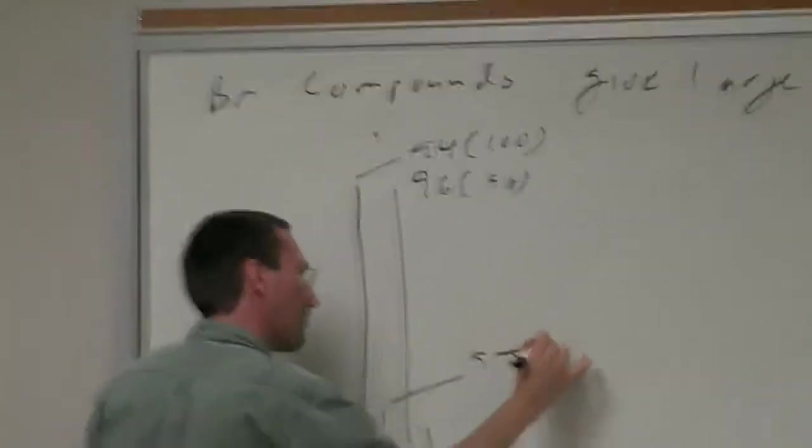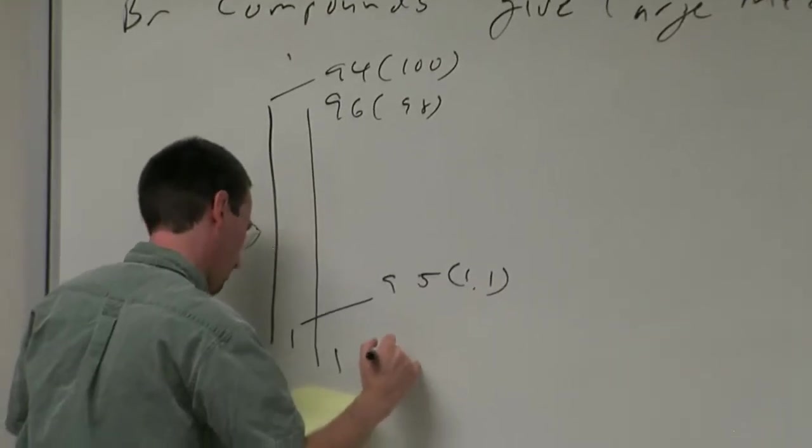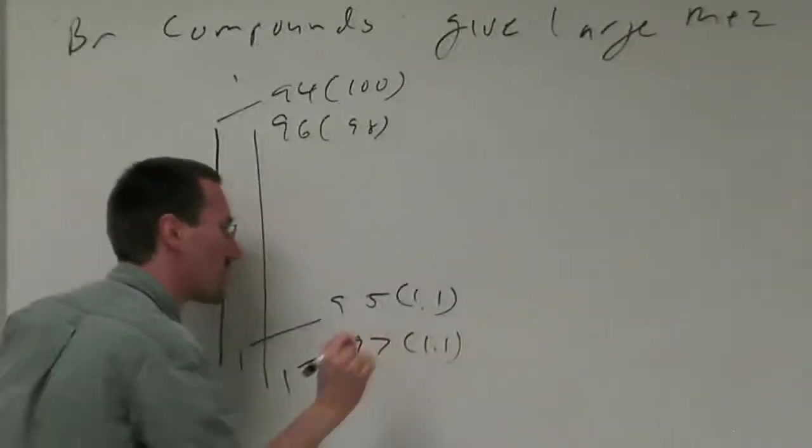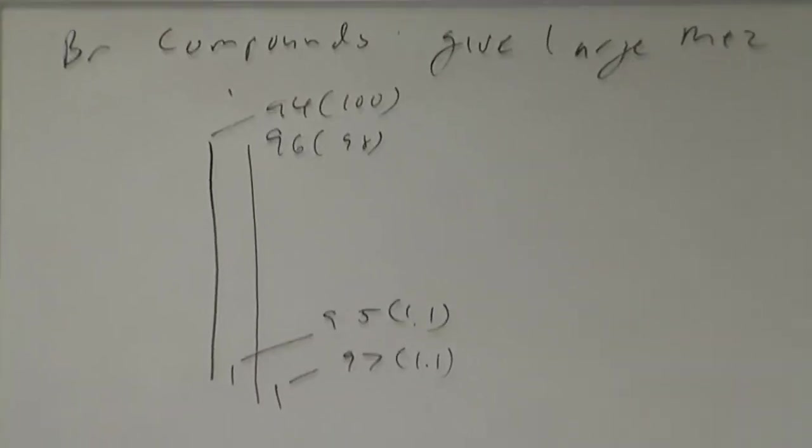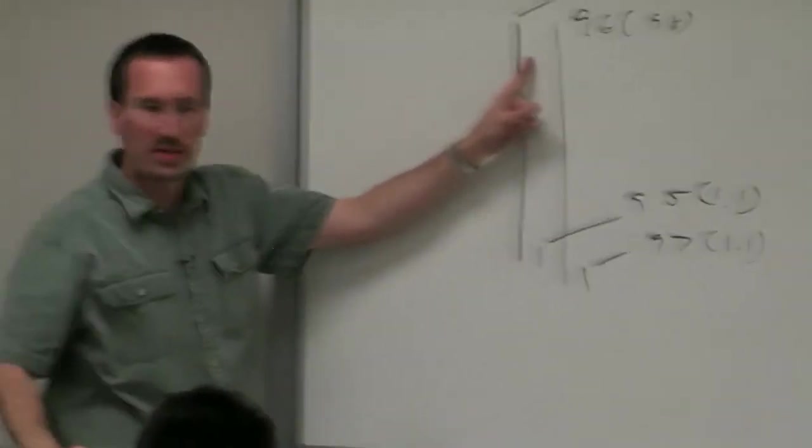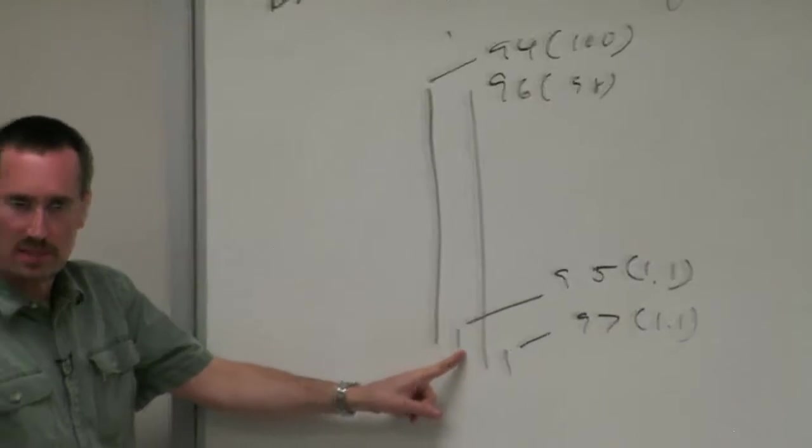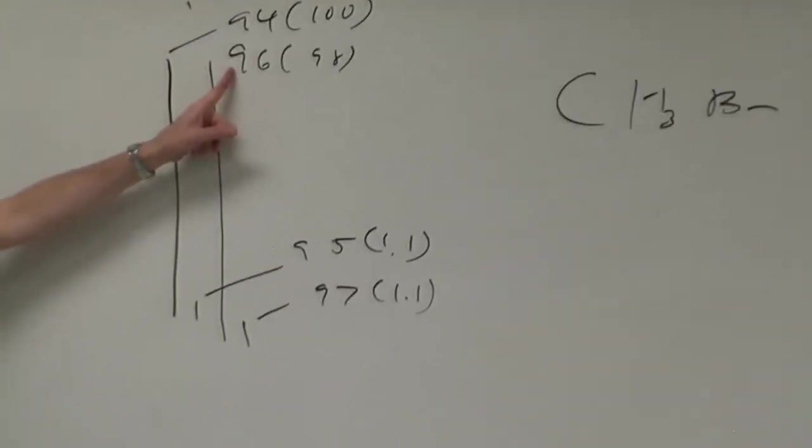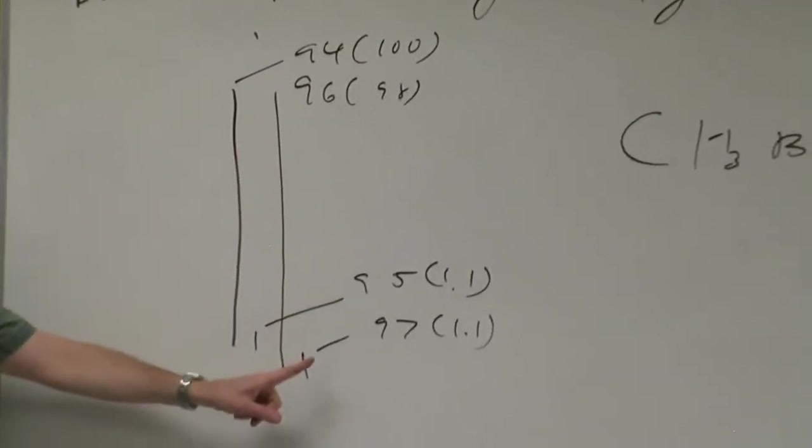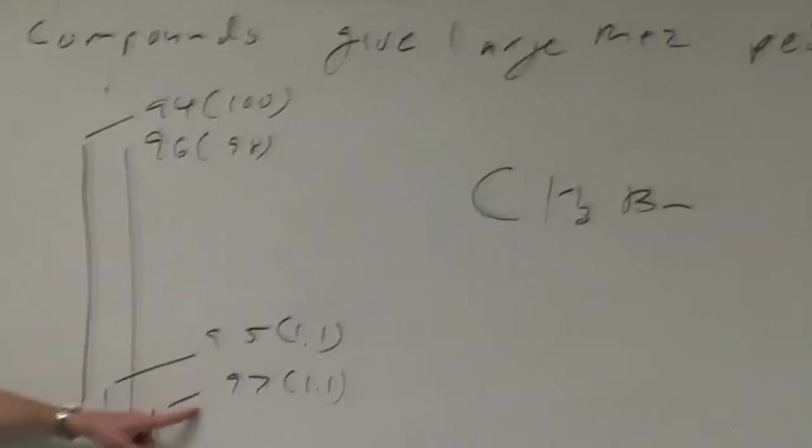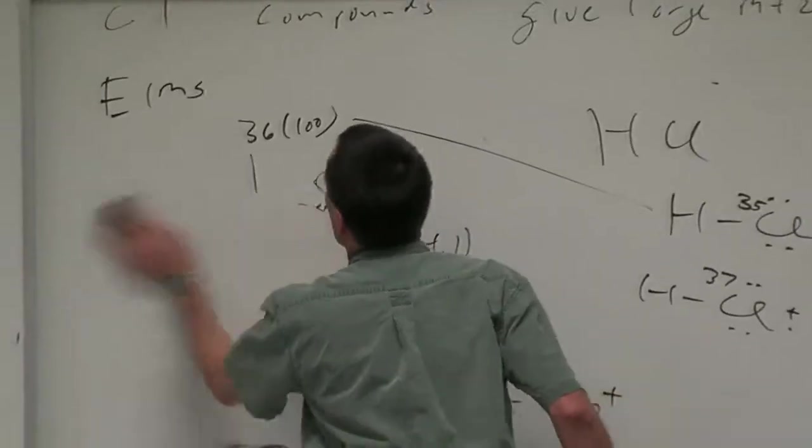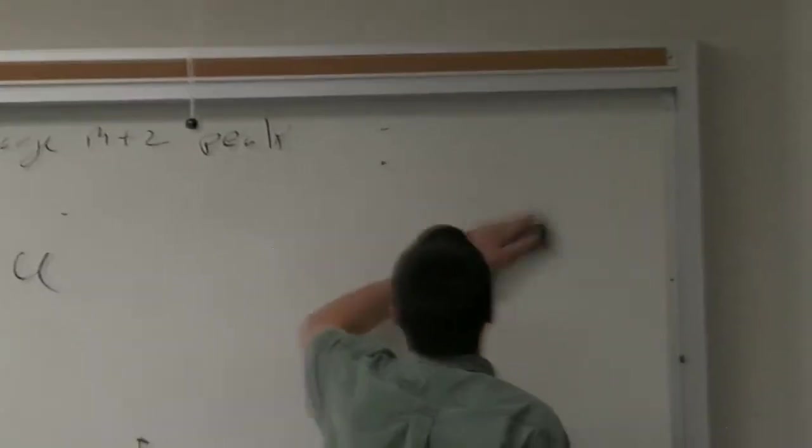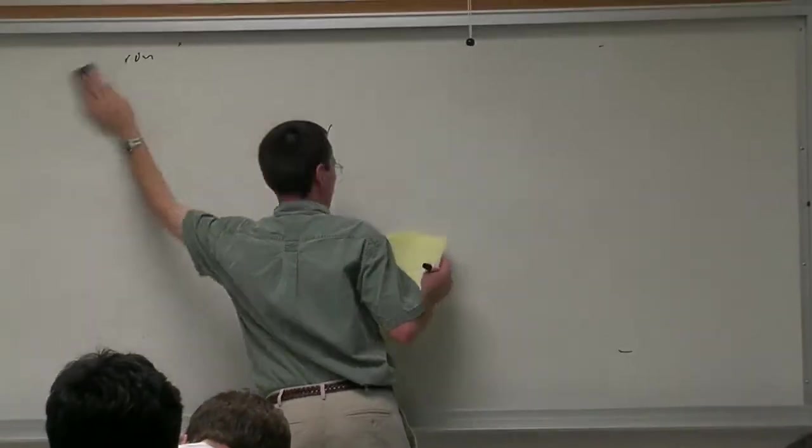Methyl bromide. Here is your C12 Br79 isotopomer, here is your C13 Br79 isotopomer. Here at 96 is your C12 Br81 isotopomer and here at 97 is your C13 Br81 isotopomer.